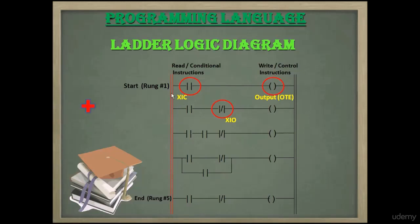There is a positive rail to provide positive supply to the output and another side has a negative rail to provide negative supply to the output. We can insert XIC, XIO, and output instruction or coil on a blank line that is called a rung.